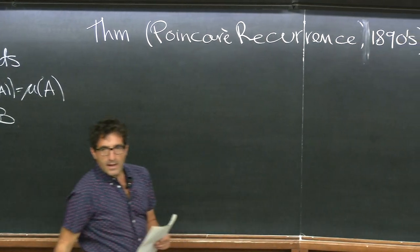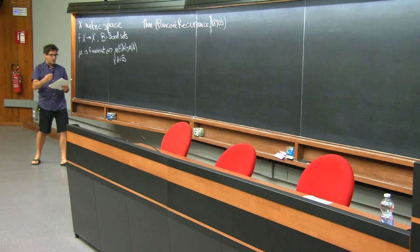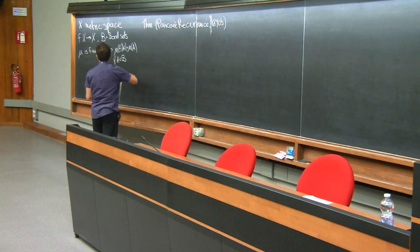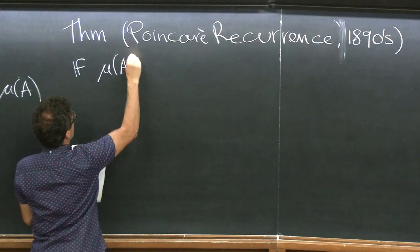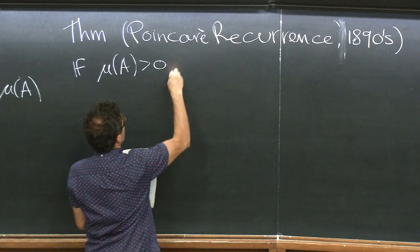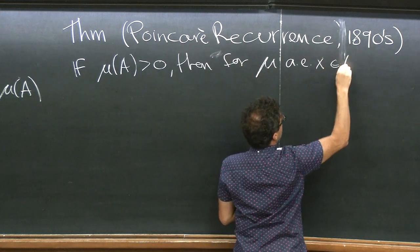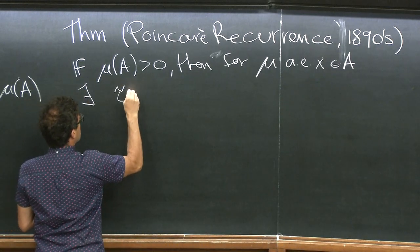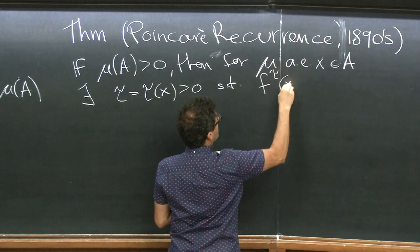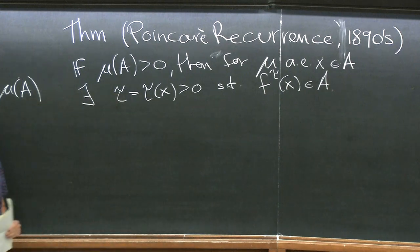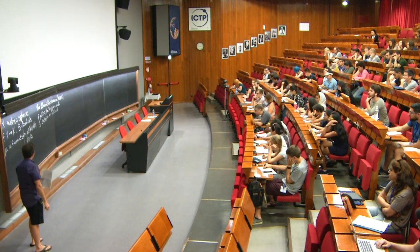The first one is called Poincaré recurrence, and goes back, I believe, to the 1890s. It's a very classical theorem, although I think that probably Poincaré proved it in the particular case of volume-preserving systems and it was later generalized to general measures. The statement is very simple: under these assumptions, if we take a set of positive measure, then for mu-almost every x in A, there exists an integer tau, which may depend on x, such that f^tau of x belongs to A. So almost every point comes back to A.